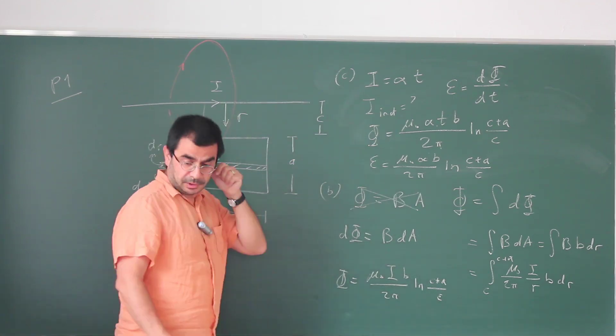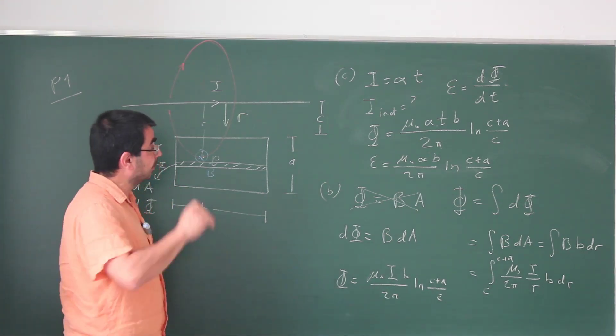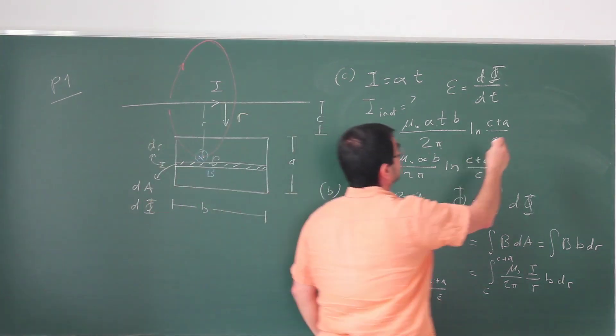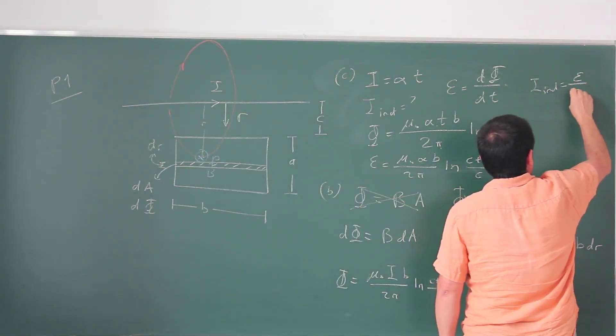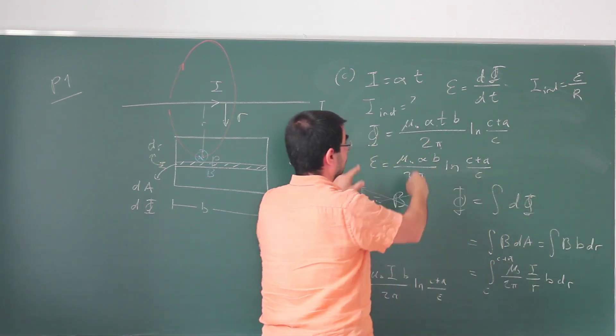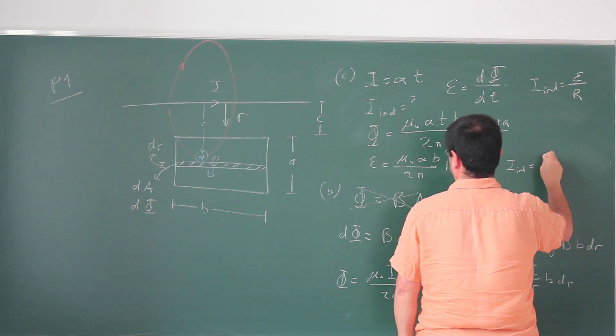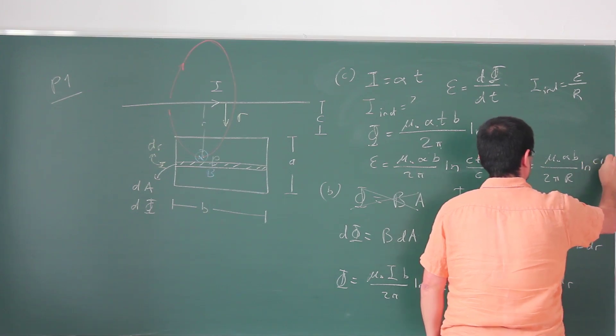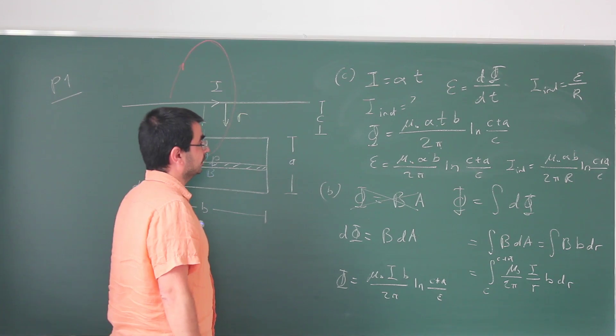So we have to actually know the resistance. They give resistance here, yes in the upper part they actually give resistance to be R. So the current induced I induced is going to be EMF over R, so it's this whole thing over here divided by R. It is mu naught alpha B over 2 pi R ln (c plus a) over c. We wrote the same thing again and again a couple times but this is what looks likely to be the answer.